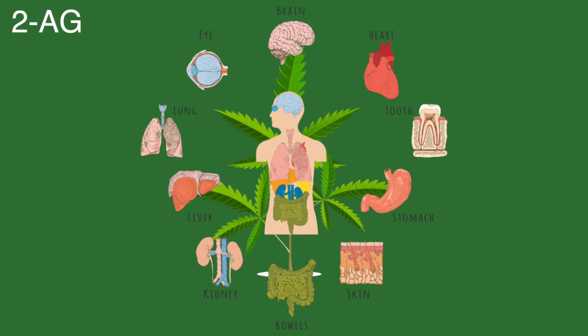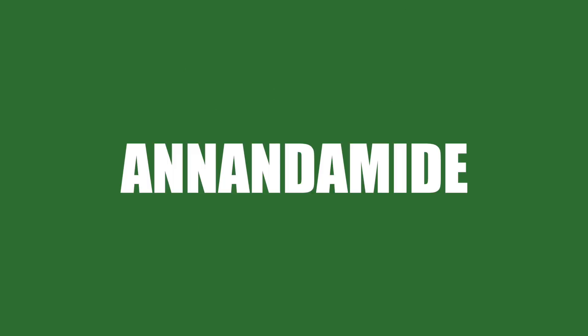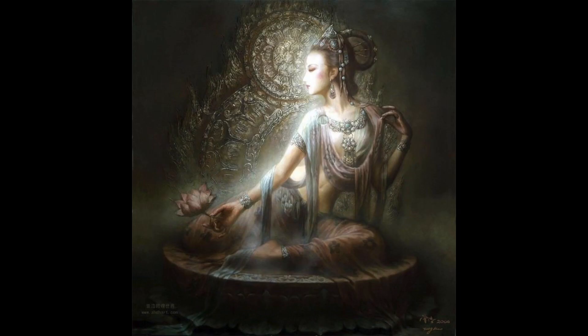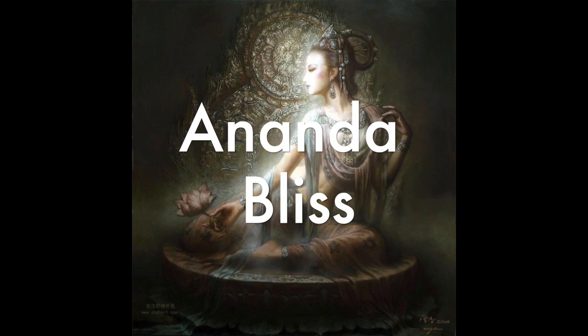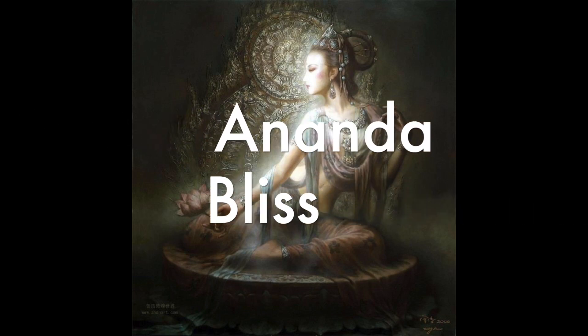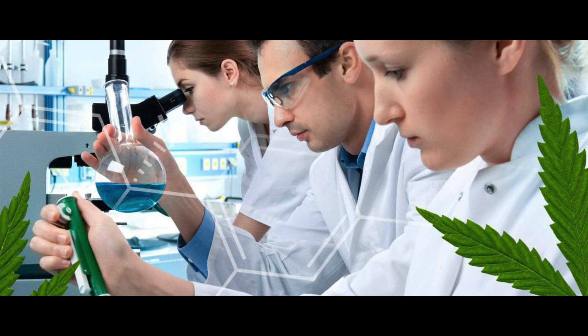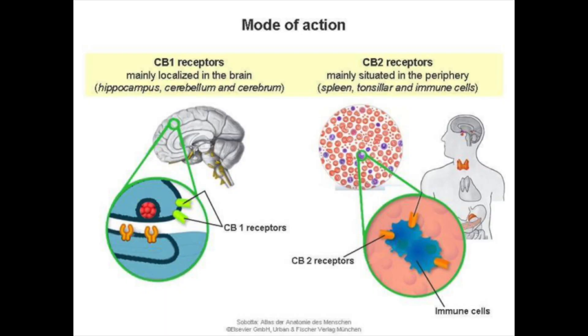2-AG and anandamide are the two major endocannabinoids that scientists know of. Anandamide was the first endocannabinoid to be identified by scientists. Discovered in 1992, its name comes from the Sanskrit word ananda meaning bliss, referring to its unique effects on the mind and body. In 1995, scientists discovered a second endocannabinoid and named it 2-AG. 2-AG is found at higher concentrations in the brain, while anandamide is found at higher concentrations in other areas of the body.